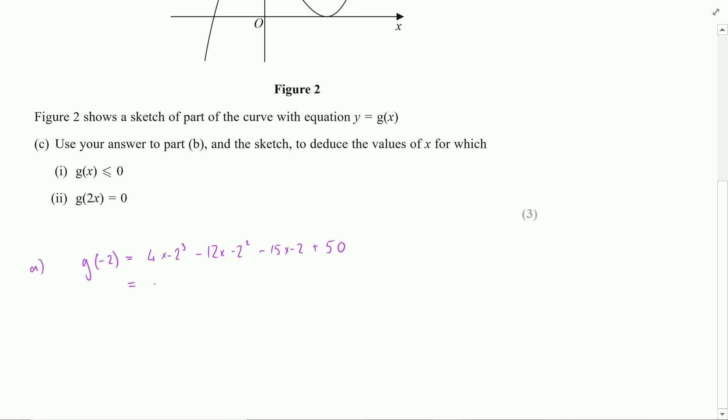Next layer of that would be to say that's 4 times by negative 8 and then that's going to be minus 12 times by 4.